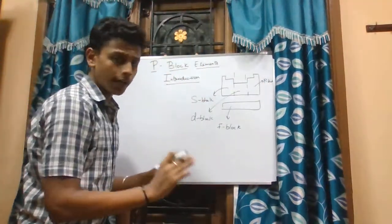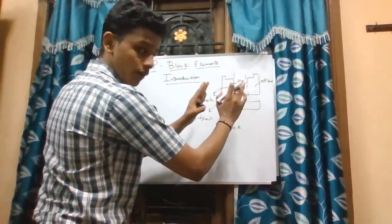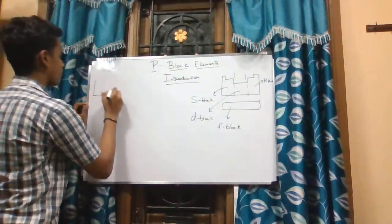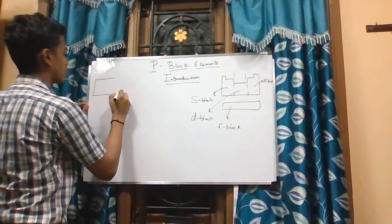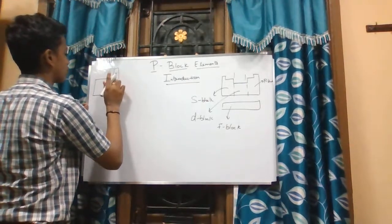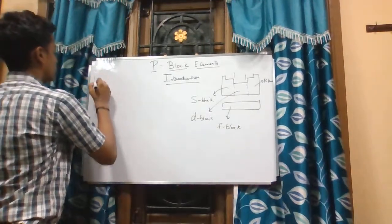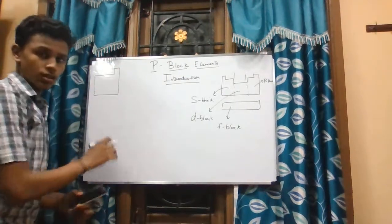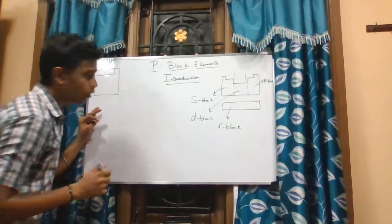The last portion is the P-block, and we will be concentrating only on that last part of the periodic table. Let me draw that part of the block here. This is the P-block element — you can refer to this on page number 28 of your textbook.